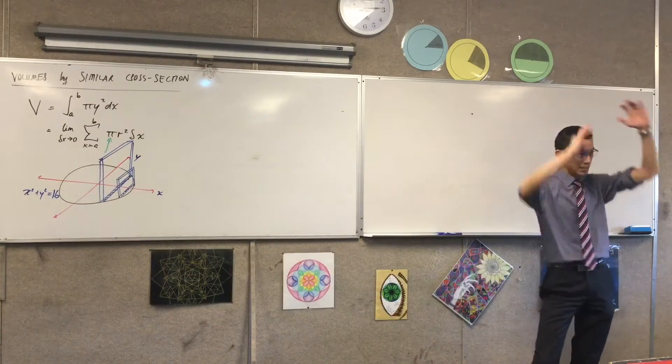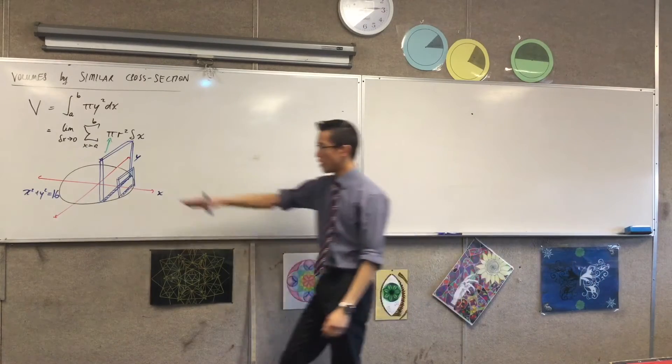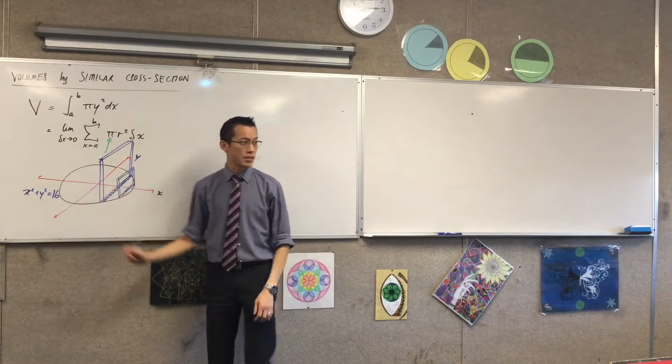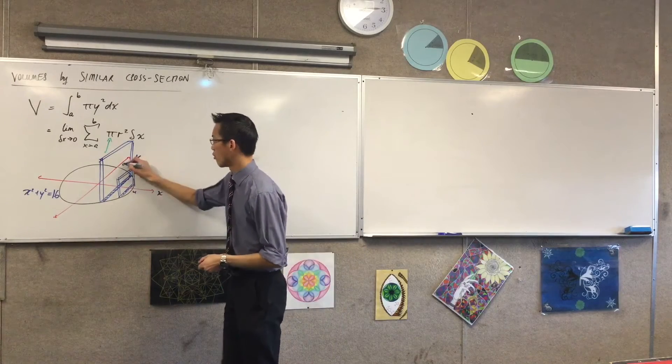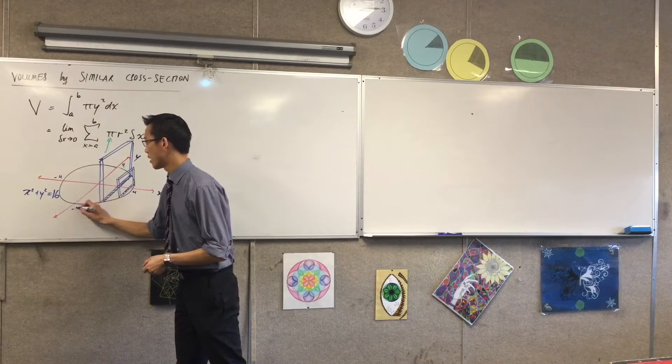Let's call x squared plus y squared equals 16. So even though we've got this 3D business happening, this is still an xy plane. So that means our intercepts are 4, 4, negative 4, negative 4.